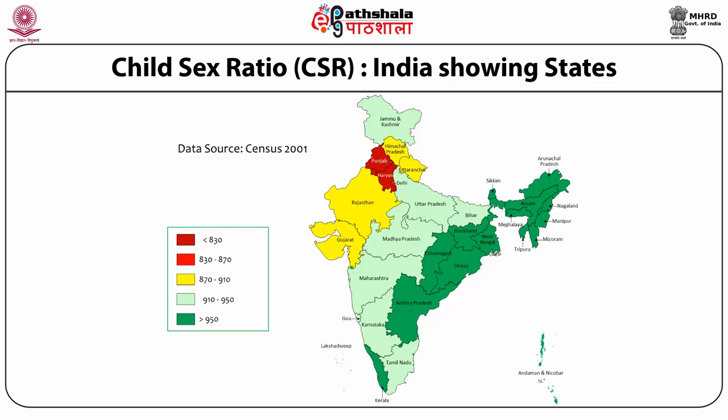In 2001, we saw Punjab and Haryana having very low ratios and the surrounding areas of Himachal, Uttaranchal, Rajasthan, Gujarat a little better off, but again well below 910. And if you look at eastern India or southern India, they are much better off.